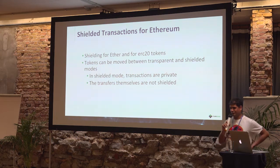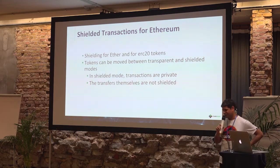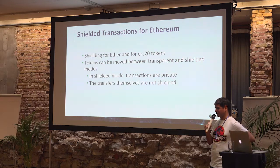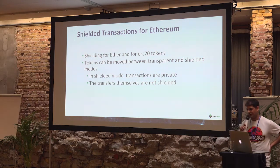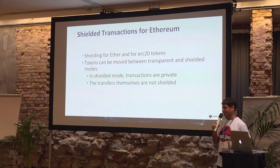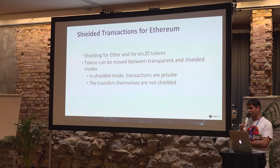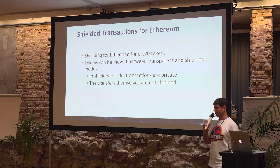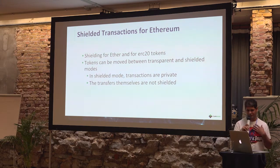Once you did it, you can privately transfer this value inside the contract. Let's say Alice puts 10 DAI or 10 Ether into the contract. The first minting or deposit to the contract will of course be visible — it will not be private — but since then, Alice can transfer her value secretly or privately inside the contract. And once she's finished, she can of course withdraw her tokens from the contract.